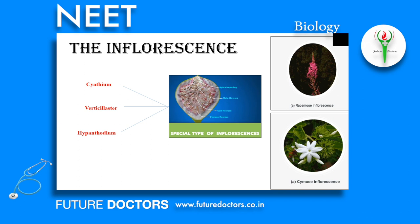The Inflorescence: A flower is a modified shoot wherein the shoot apical meristem changes to a floral meristem. When a shoot tip transforms into a flower, it is always solitary. The arrangement of flowers on the floral axis is termed inflorescence. Two major types are defined: racemose and cymose. In racemose inflorescence, the main axis continues to grow and the flowers are borne laterally in acropetal order. In cymose inflorescence, the main axis terminates in a flower, hence it is limited in growth, and the flowers are borne in basipetal order.